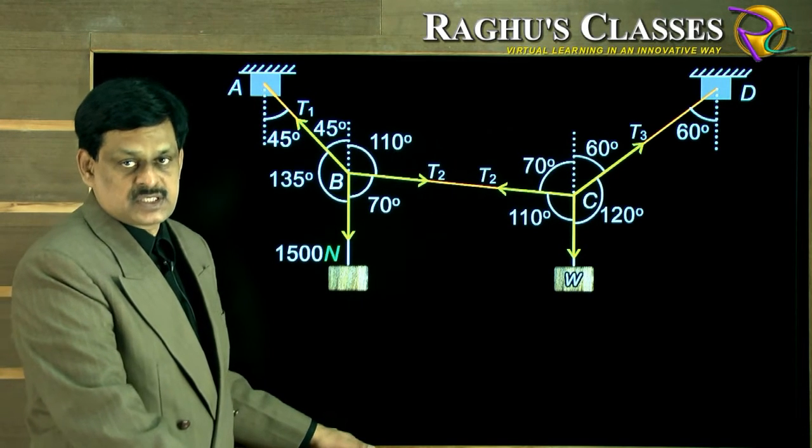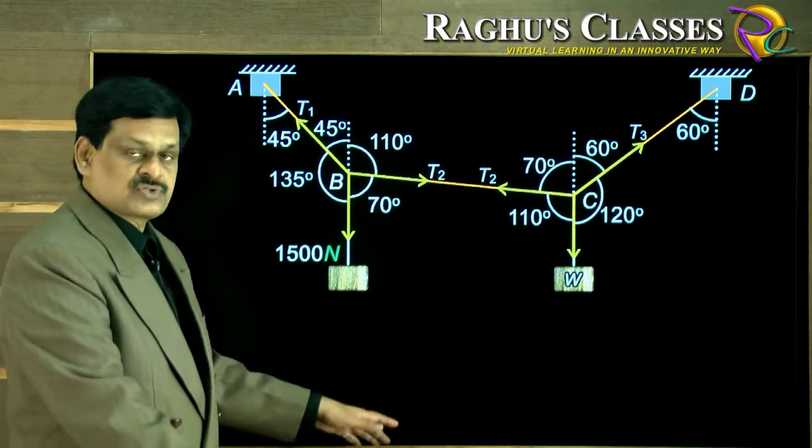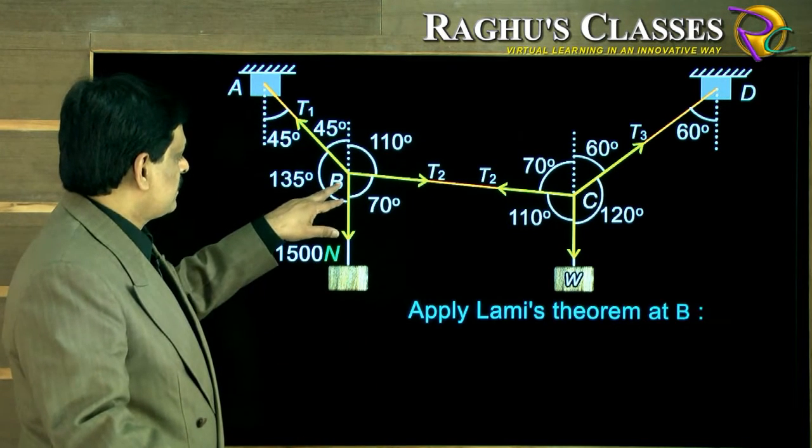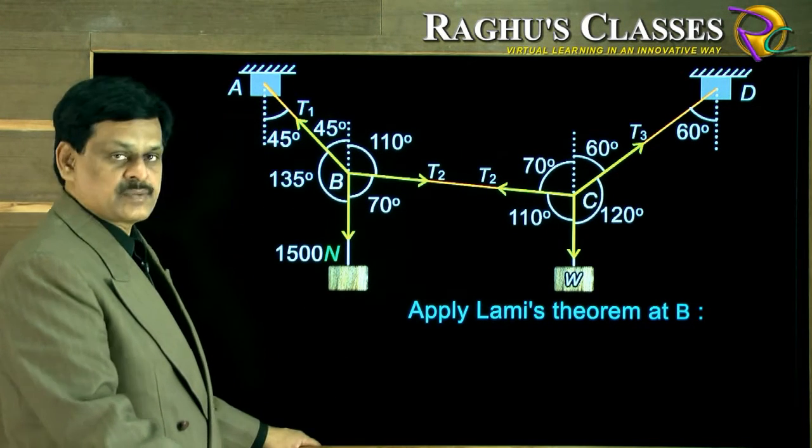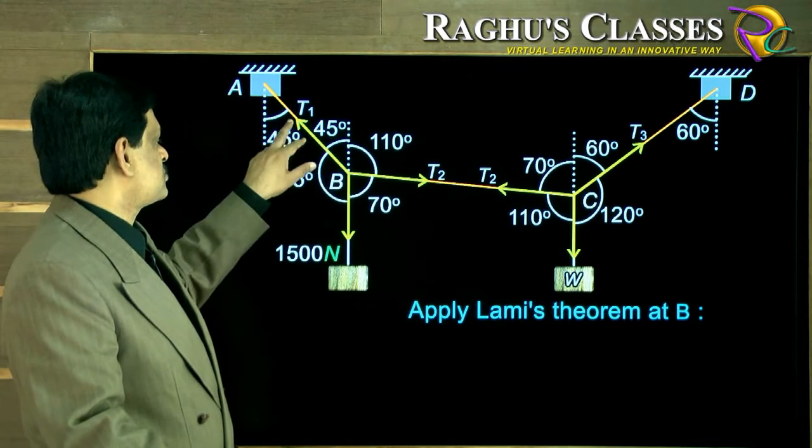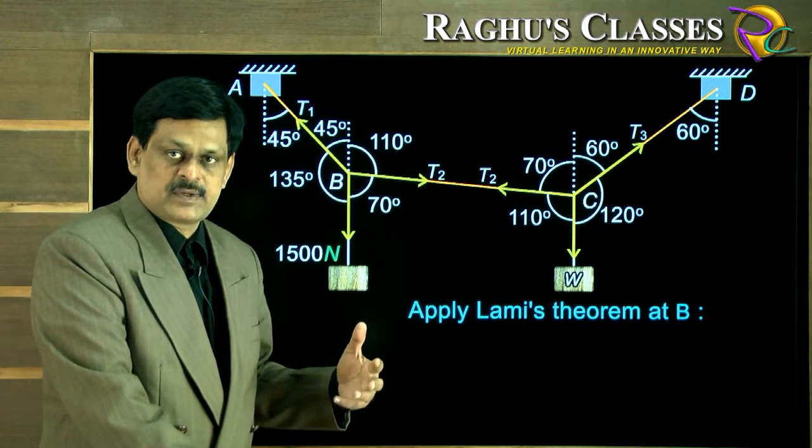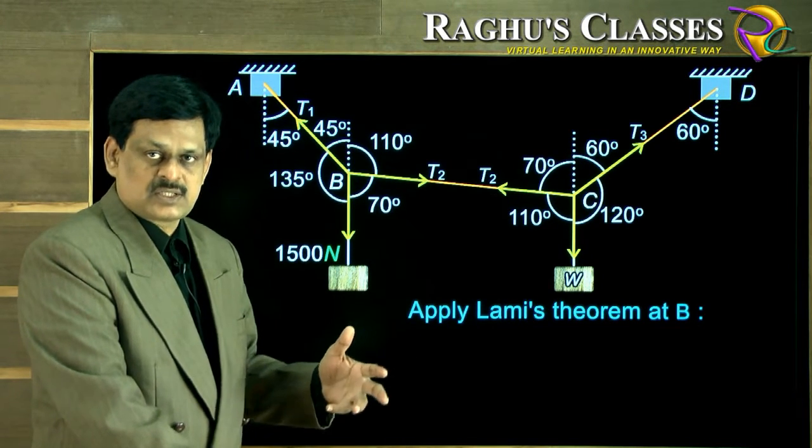So we can just apply Lami's theorem, the easiest way here, because only three forces are keeping a particle in equilibrium. So if you consider the point B and apply Lami's theorem there, if you take the first force T1, you know Lami's theorem is each force upon sine of the opposite angle, or angle between the other two forces, is a constant.